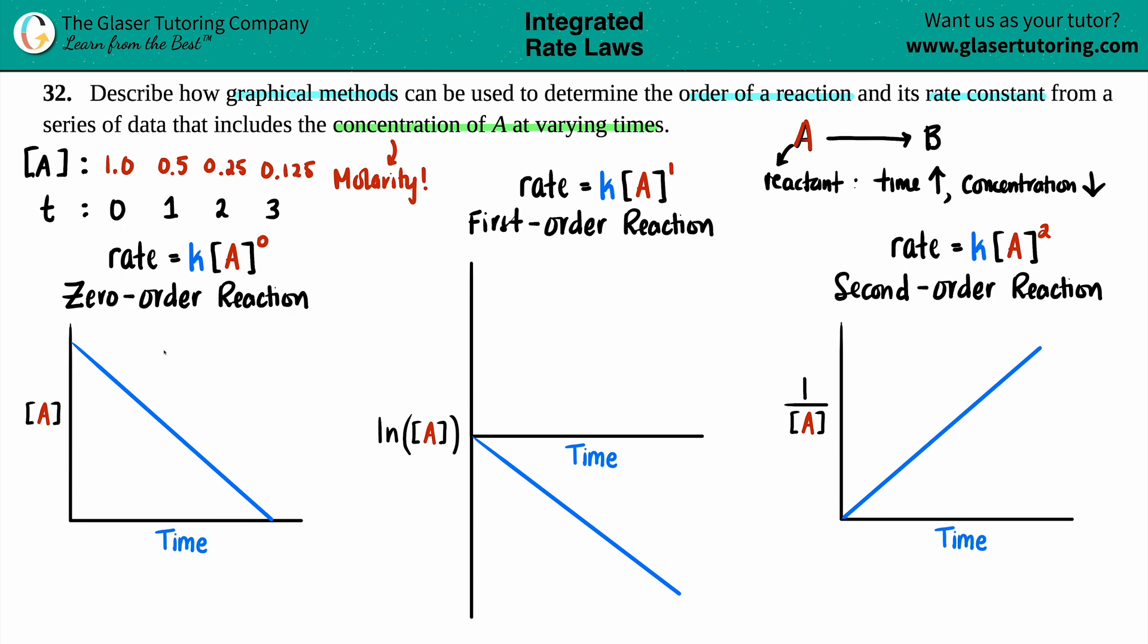What you're going to do is you're going to plot these points. Now me personally, I would always start off with the zero order reaction and see if it fits the mold. But if it doesn't, then you move on to your first order reactions and then your second order reactions. The zero order reaction is always a graph of your concentration over time. So you don't have to do anything with these concentration values, just plot them.